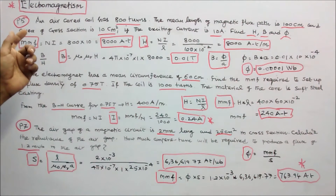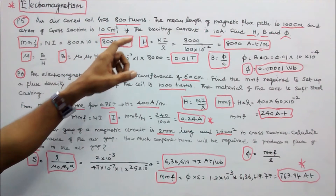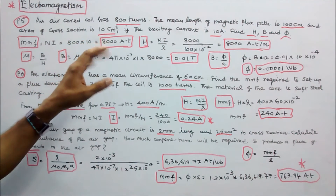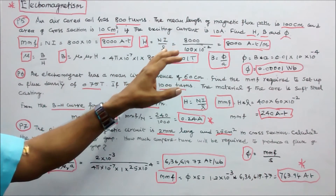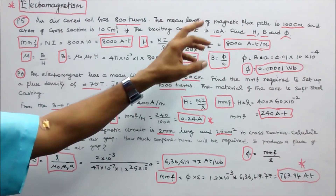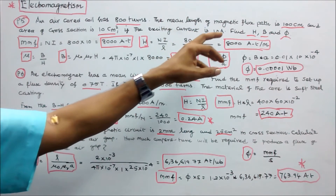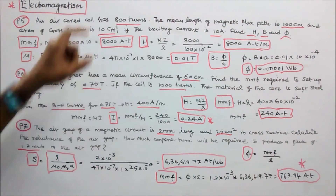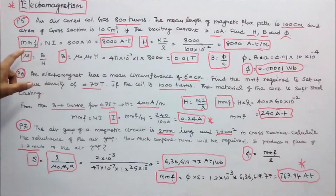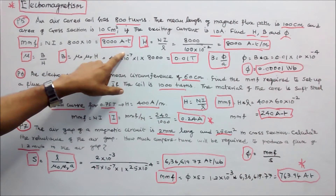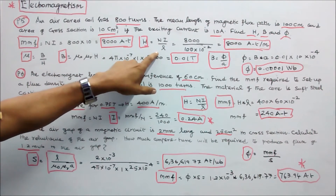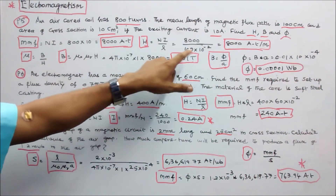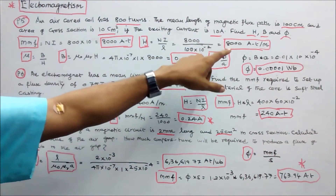Problem number 5. An air core coil has 800 turns. The mean length of the magnetic flux path is 100 cm, and the area of cross section is 10 cm square. If the exciting current is 10 amps, find magnetic field intensity H, magnetic flux density B, and flux Φ. MMF equals N into I: 800 into 10 equals 8000 ampere turns. H equals N into I divided by L. L equals 100 cm, so H equals 8000 divided by 100 into 10 power minus 2, giving 8000 ampere turns per meter.